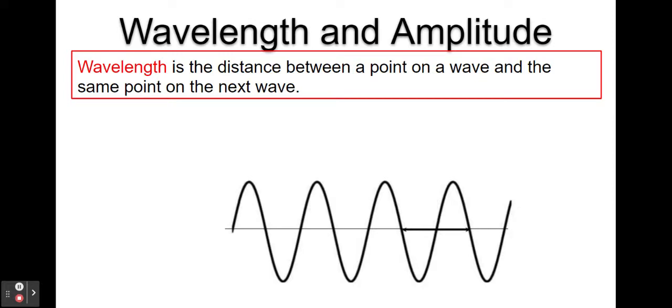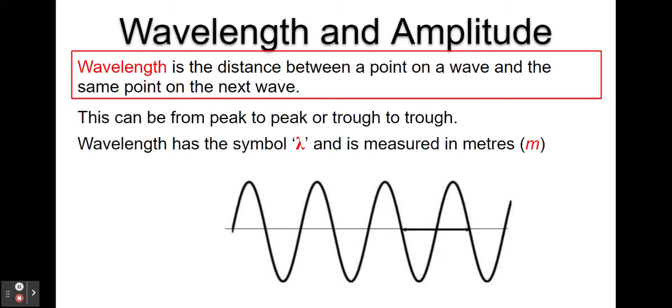There are some properties of waves that we have to be aware of. Firstly, wavelength. The wavelength of a wave is the distance between a point on a wave and the same point on the next wave. That could be from the peak to the peak, or from the trough to the trough. Wavelength has the symbol of the Greek letter lambda, and it's measured in meters. That would be a wavelength there from the crest of that wave to the crest of the next, or from the trough of the wave to the next trough.